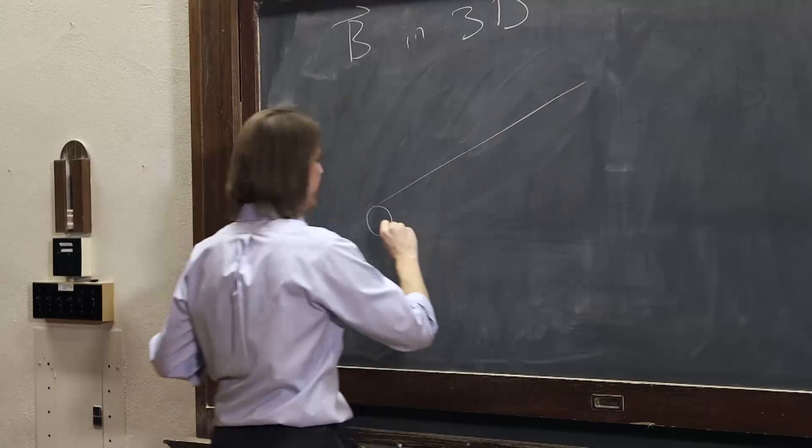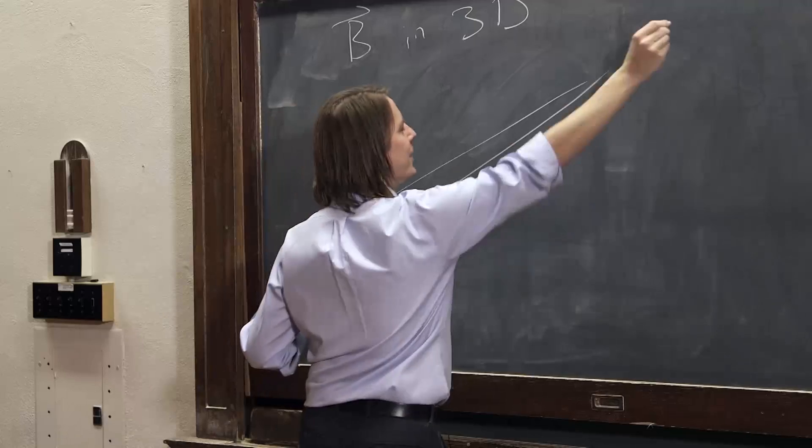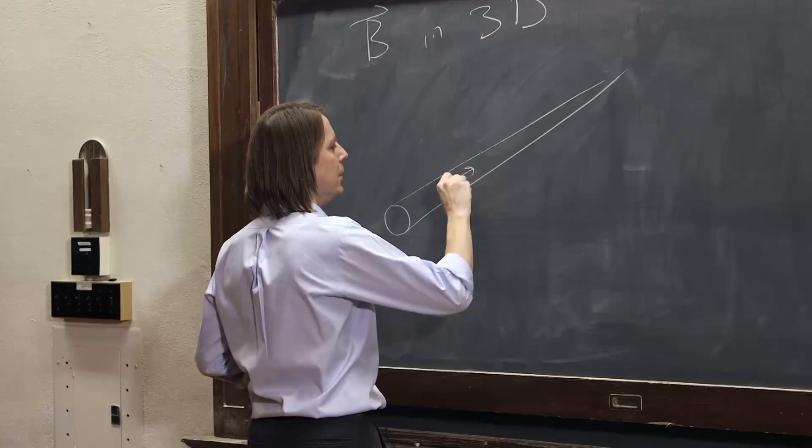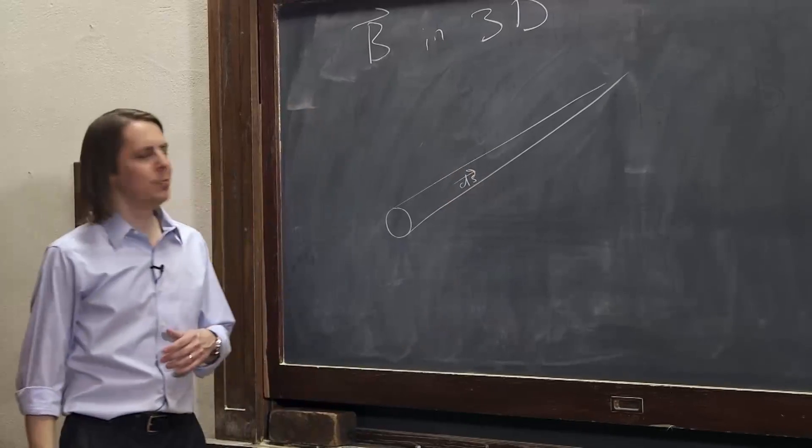Here's the wire, and I'm drawing it with some perspective going off into the sunset. We imagine this little DS here, this little differential piece of the wire.